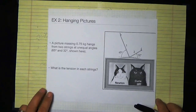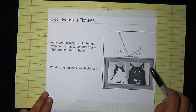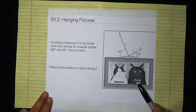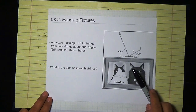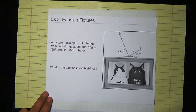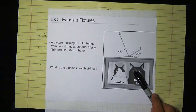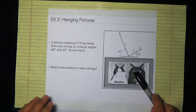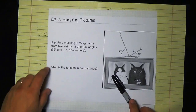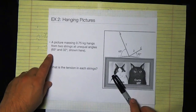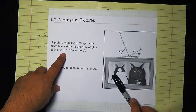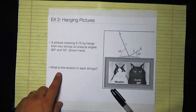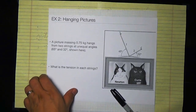This is a problem we've talked about before — the idea of hanging a picture. This is a picture of my two cats, Newton and Curie, named for Isaac Newton and Marie Curie. The picture is hanging from two strings tied to it and pointing at different angles. The picture has a mass of 0.75 kilograms and the two strings have angles of 65 degrees and 32 degrees. What is the tension in each of the two strings?